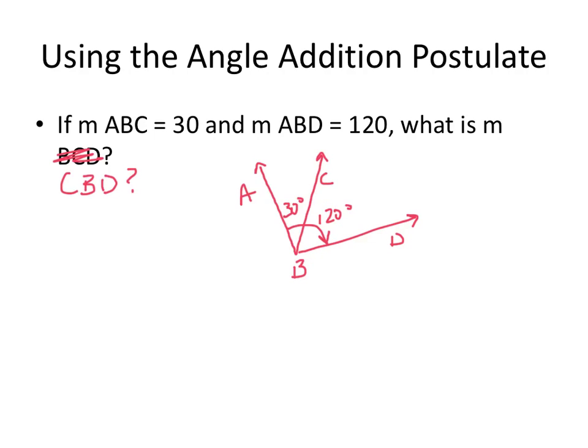Well the angle addition postulate says that 30 plus the measure of angle CBD should equal 120 degrees and simple subtraction reveals that the measure of that angle CBD is 90 degrees.